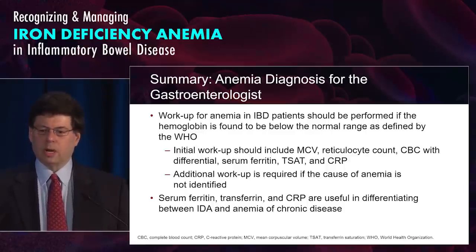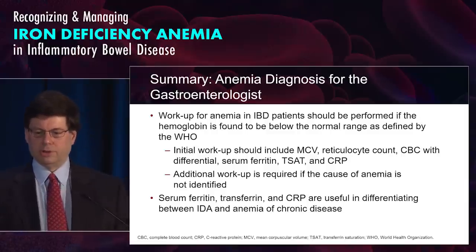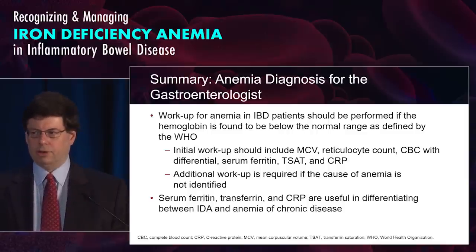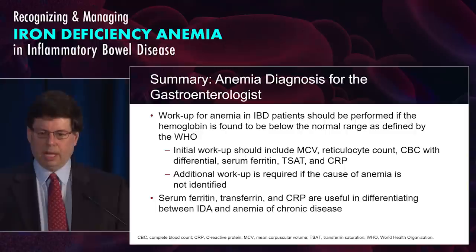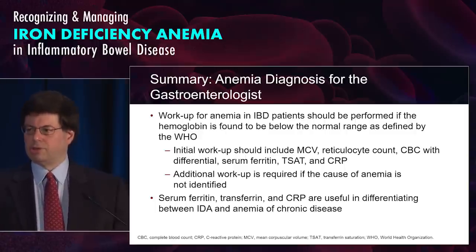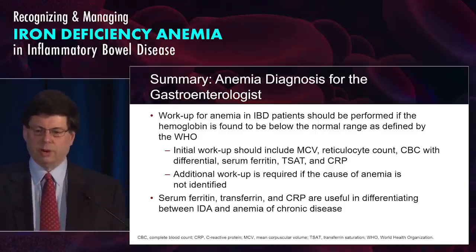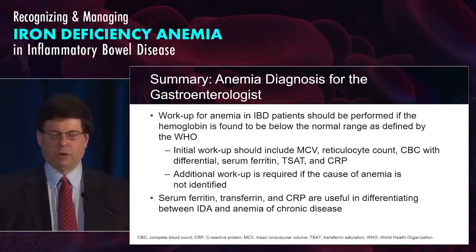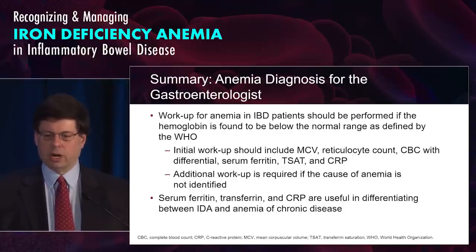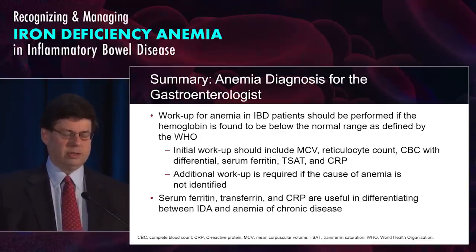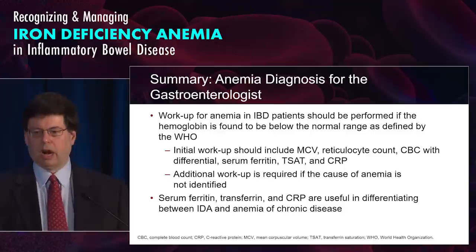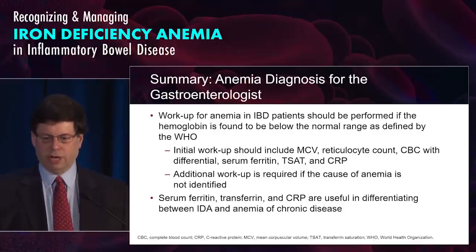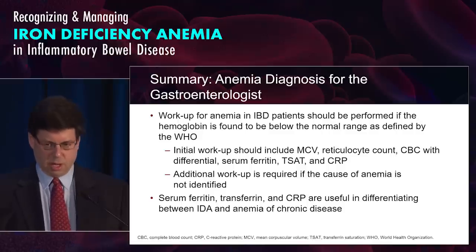To summarize: the workup for anemia in patients with IBD should be performed if the hemoglobin is below the WHO standard — less than 13 g/dL for men and lower for women due to menstruation. Workup should include MCV, reticulocyte count, CBC with differential, serum ferritin, saturation of transferrin, and a CRP. Do additional workup if the cause isn't identified from initial parameters and is not due to iron deficiency. Ferritin, transferrin, and CRP are helpful in differentiating iron deficiency anemia from anemia of chronic disease.